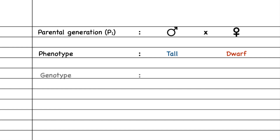Regarding the genotype of these plants, the tall plant is a pure dominant plant — meaning it has the factors, or genes, capital T capital T. In the case of the dwarf plant, the factors or genes will be pure recessive — that is small t and small t.